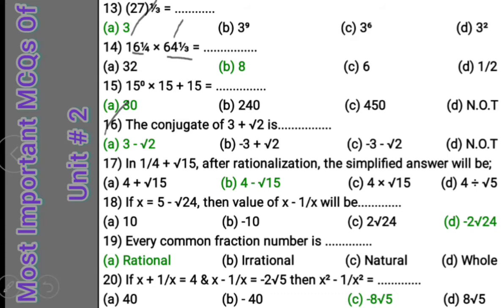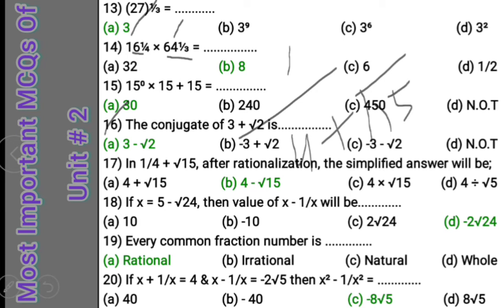Question 17: 1 upon 4 plus square root 15 — after rationalization the simplified answer will be what? When we rationalize a denominator, we multiply and divide by its conjugate form. The conjugate of 4 plus square root 15 is 4 minus square root 15. After simplification, the result is 4 minus square root 15.